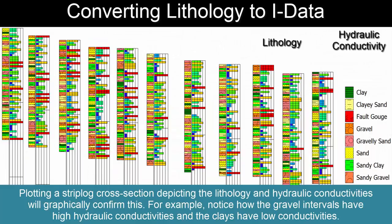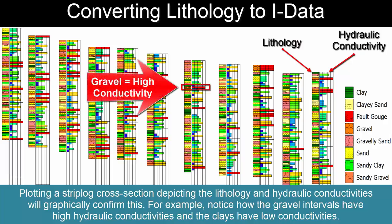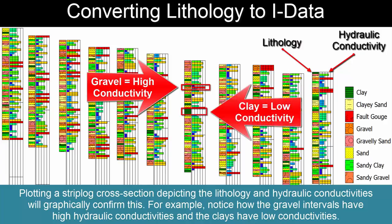Plotting a strip log cross-section depicting the lithology and hydraulic conductivities will graphically confirm this. For example, notice how the gravel intervals have high hydraulic conductivities and the clays have low conductivities.